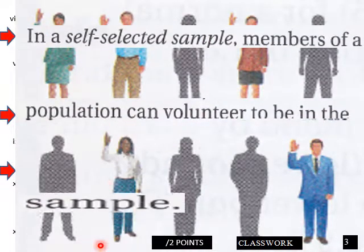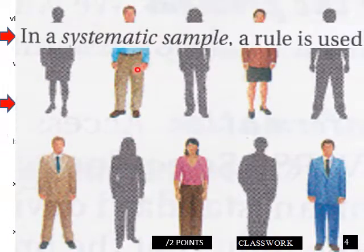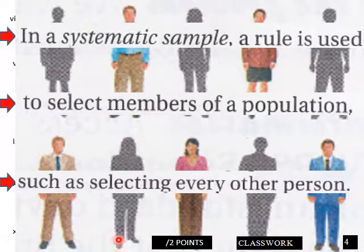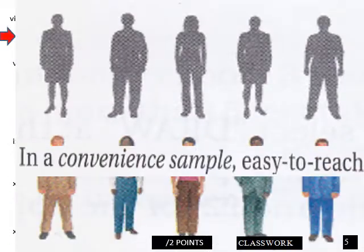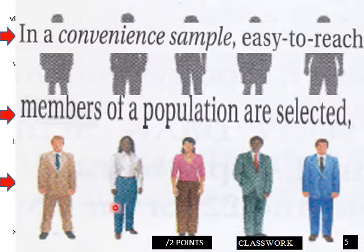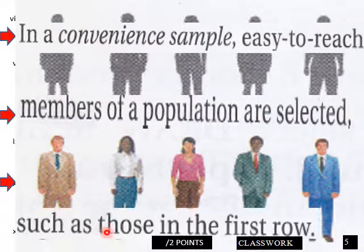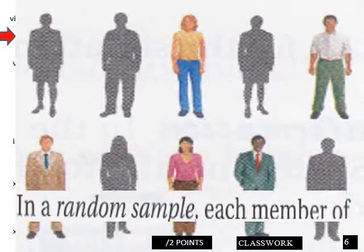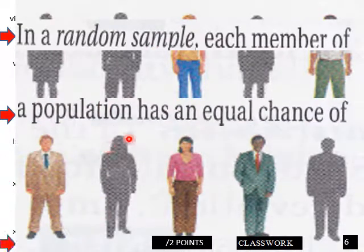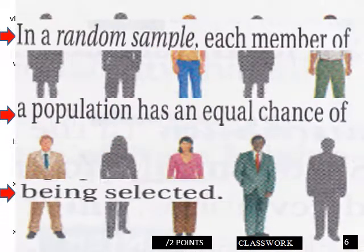In a self-selected sample, members of a population can volunteer to be in the sample. In a systematic sample, a rule is used to select members of a population, such as every other person. In a convenient sample, easy-to-reach members of a population are selected, such as the first row. In a random sample, each member of a population has an equal chance of being selected.